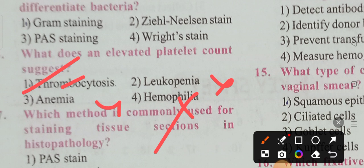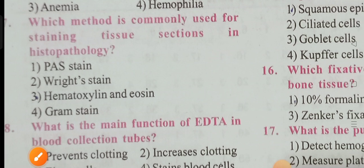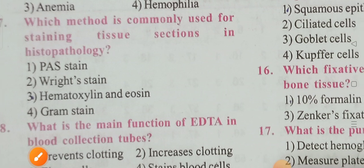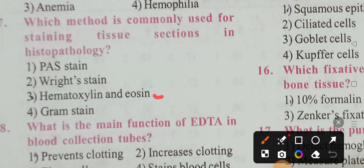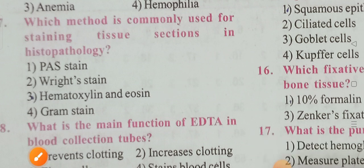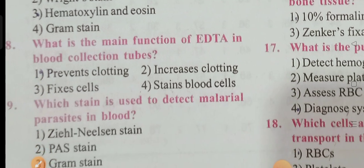Which method is commonly used for staining tissue sections in histopathology? Options are PAS stain, Wright stain, hematoxylin and eosin, and Gram stain. Option 3 is the correct answer — hematoxylin and eosin (H&E) is used for staining tissue sections in histopathology.